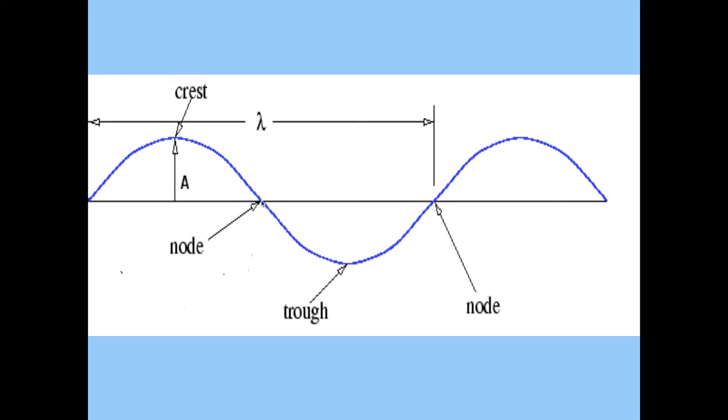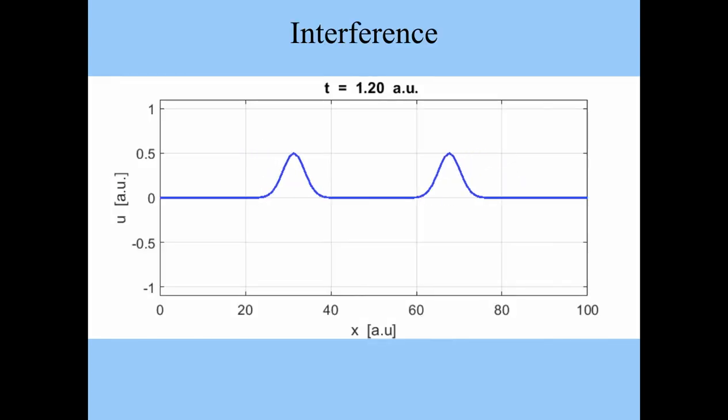The node is a place that doesn't move, and we'll talk about that in a little bit. The wavelength is the length of the complete wave. You can measure that from node to node, or you can measure that from crest to crest. And then lastly, the amplitude is how high it goes. Both the amplitude and the wavelength are both measured in meters.